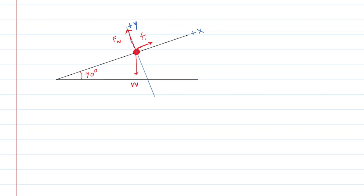If our assumption is wrong, then when we calculate F, we'll get a negative value, so we'll have to turn it around and point it the other way. For now, we'll assume it's up the ramp and therefore positive. We also have the tension force, because body A is connected to body B through a rope. The tension force is going to be pulling body A up the ramp as well, and we label that T.